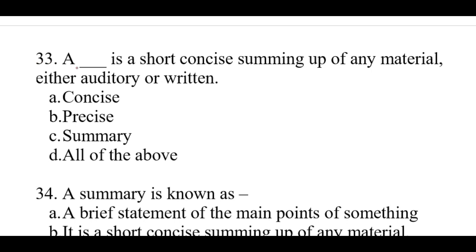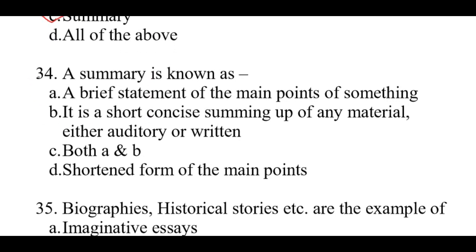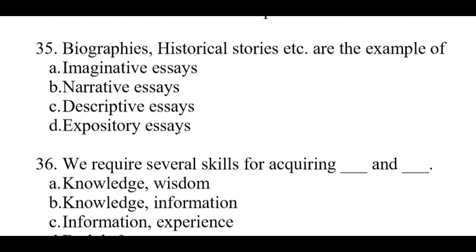Question number 33: A summary is a short, concise summing up of any material, either auditory or written. The right option is C: Summary. Question number 34: A summary is known as. The right option is C: Both A and B — a brief statement of the main points of something, and a short concise summing up of any material, either auditory or written. Question number 35: Biographies, historical stories, etc. are examples of. The right option is B: Narrative essays.